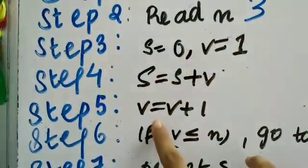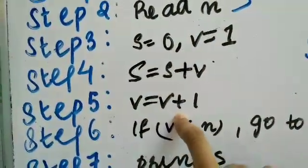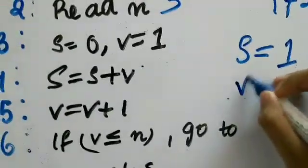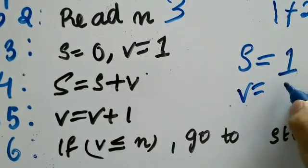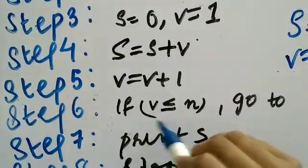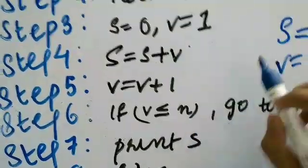Now we have to add, next step, we have to add 1 to v. What is the current v? Current v is 1. So the new v would be v plus 1. 1 plus 1 is 2. Now next step, let's check if this v is less than or equal to n. What is v?